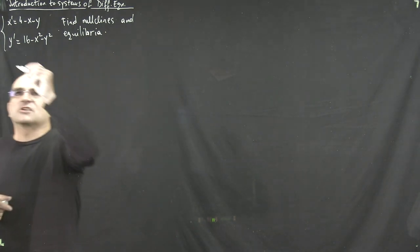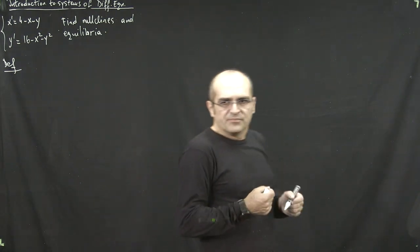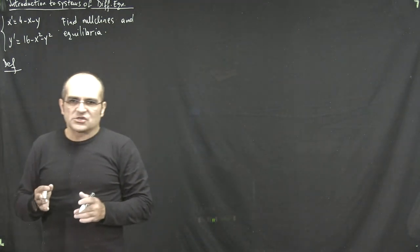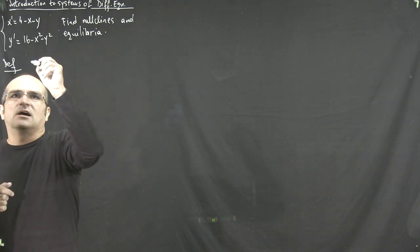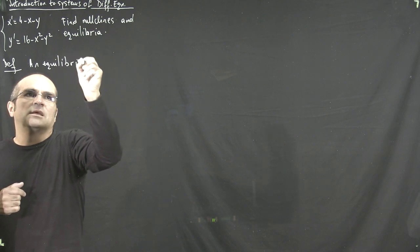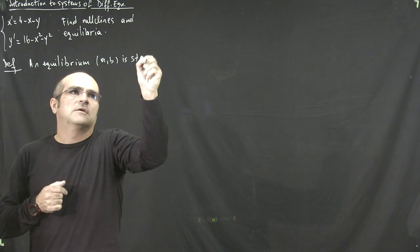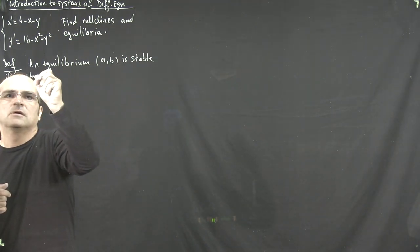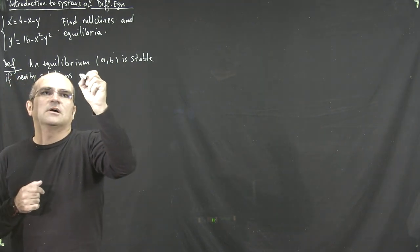Before we do that, let me briefly define what a stable equilibrium looks like. We're going to use the same intuitive definition that we use for single ODEs. Basically, we say that an equilibrium point AB is stable if nearby solutions, starting near that point, converge to it.